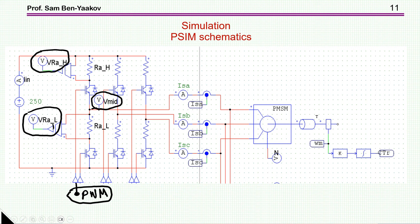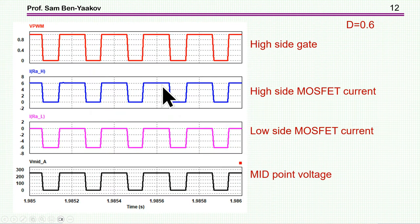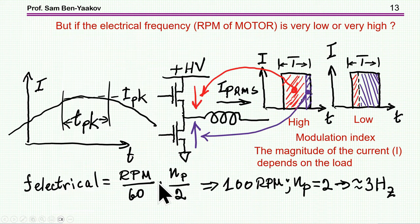Here I'm showing a PSIM simulation with a control part, a motor, a driver, and the inverter. I'm showing four signals: the upper-side current, the lower-side current, the gate drive of the upper-side transistor, and the midpoint voltage. For a given duty cycle, we have the PWM drive of the high-side switch, the high-side MOSFET current, and the low-side MOSFET current — which is negative, meaning current flows from source to drain. The midpoint generates the required average voltage.